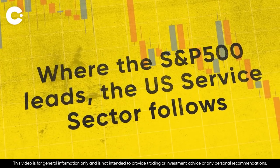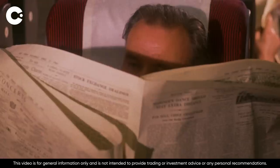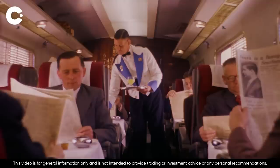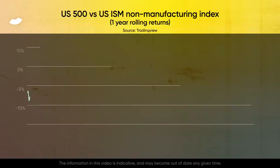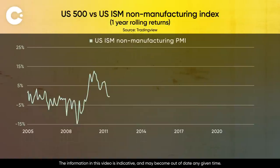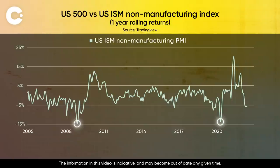When global trade starts slowing, activity in the service sector — which means things like leisure, finance and retail — tends to drop. Change in yearly US service sector activity is represented by the ISM non-manufacturing PMI. It does badly during recessions and picks up in good times.